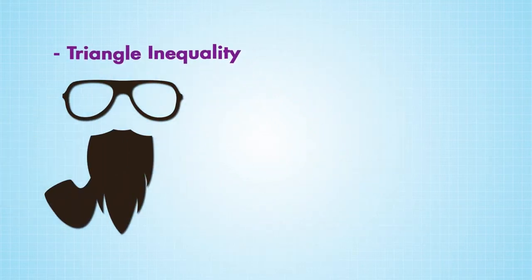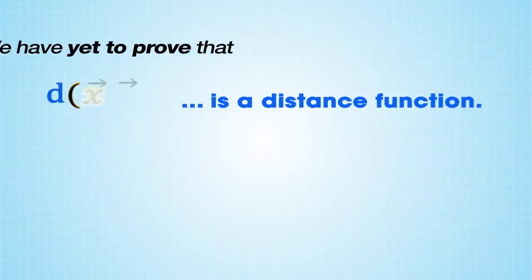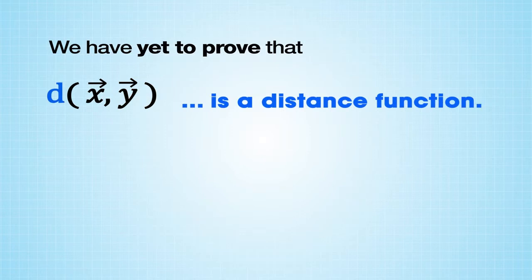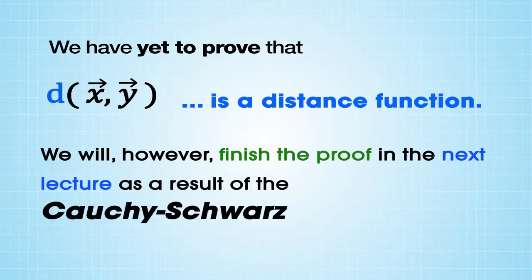Triangle inequality: See next lecture. Note, we have yet to prove that d(x,y) is a distance function. We will, however, finish the proof in the next lecture as a result of the Cauchy-Schwarz inequality.